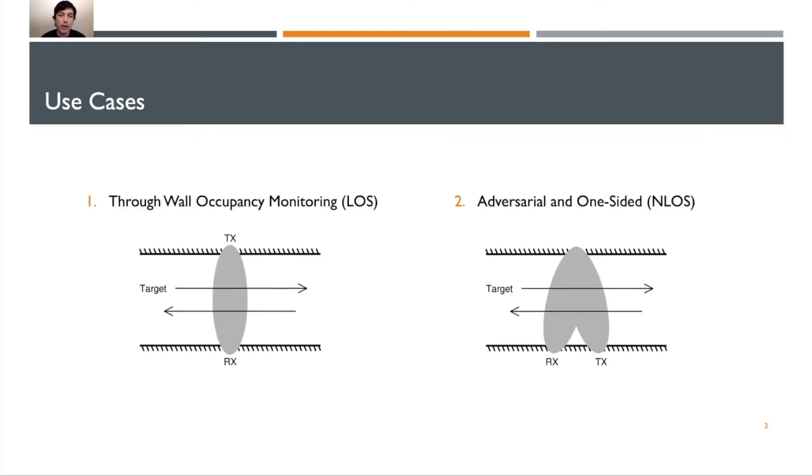The goal of our work here has two specific parts. The first is through-wall occupancy monitoring. On the left, you can see we have a hallway environment with two walls. The human walks across this hallway back and forth. The transmitter and receiver, TX and RX, are transmitting through the wall into the hallway environment where the target is moving.